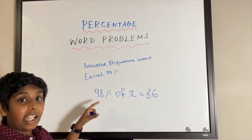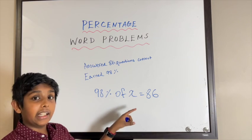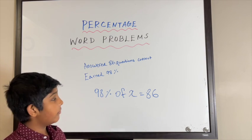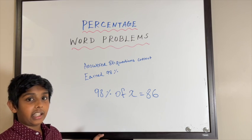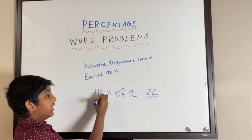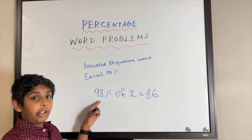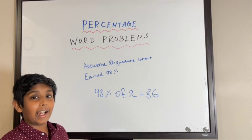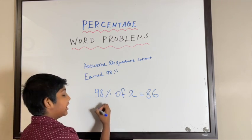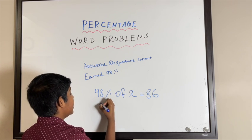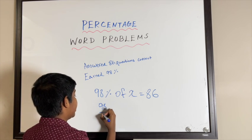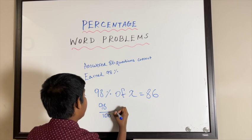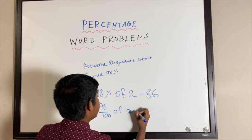So 98 percent of x equals 86. We need our x value, so I'm going to move 98 percent to that side first. Let's convert 98 percent to a fraction. So 98 percent to a fraction is 98 over 100. So 98 over 100 of x equals 86.